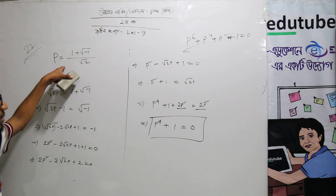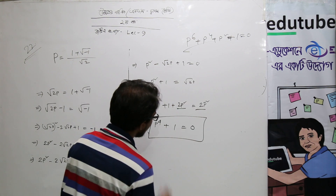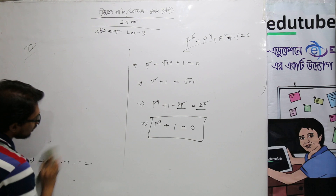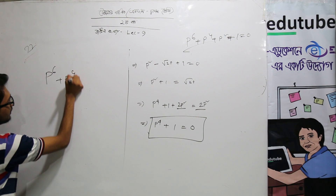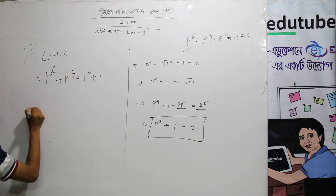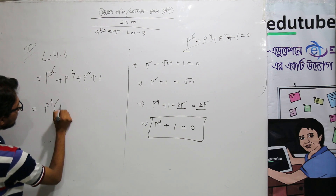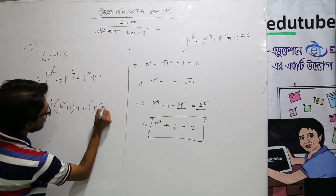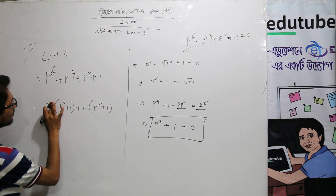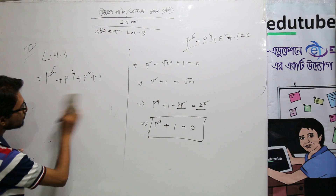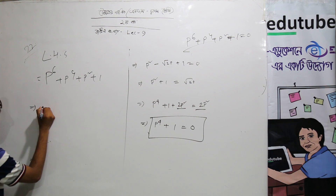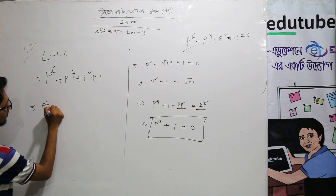Substituting, we get p^6 plus p^4 plus 1 equals to 1 on the left hand side equals to eta. Then we just put 4 plus p squared plus 1, and this is 1 plus p squared plus 1. Then we put 4 in the left hand side.